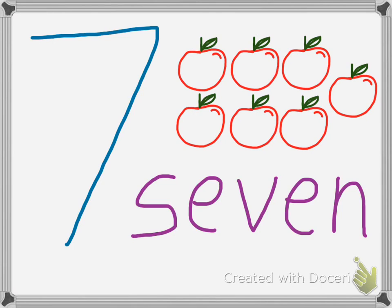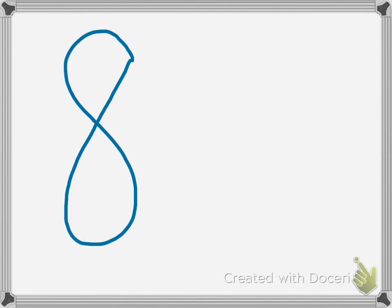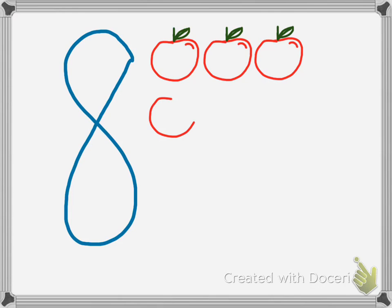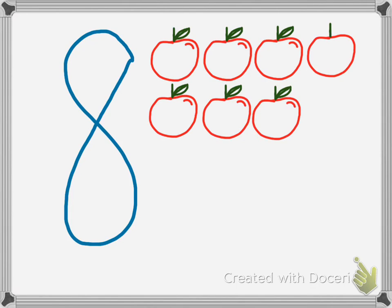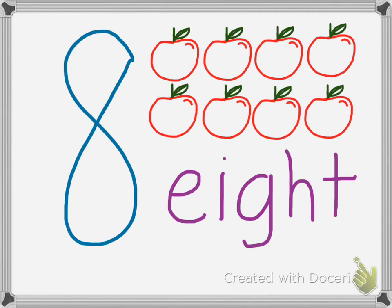And now we have the number after 7, which is 8. So, let's count 1, 2, 3, 4, 5, 6, 7, 8. 8 apples. And now we see the number 8 in written form. Everybody say 8. Great! 8 is great.